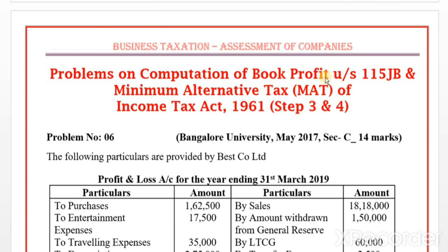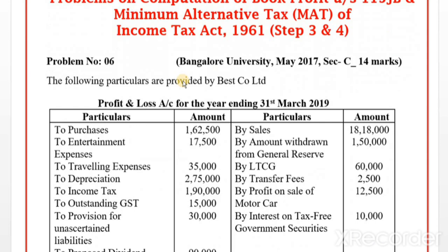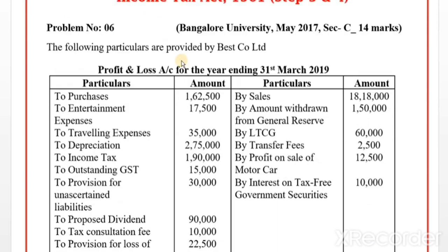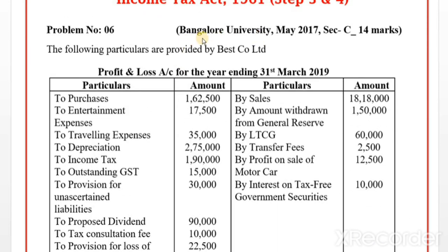First, calculate book profit — that is step number three. Then calculate tax on book profit — that is step number four. The question for problem number six was asked in the Bangalore University May 2017 exam. Here we will only compute book profit using the format, not the normal provisions.